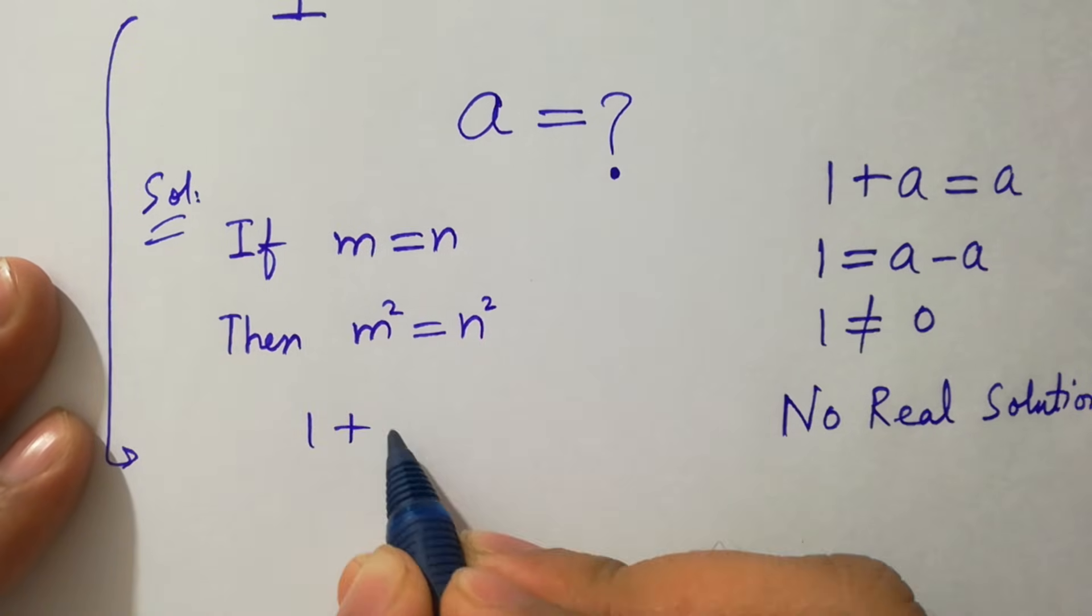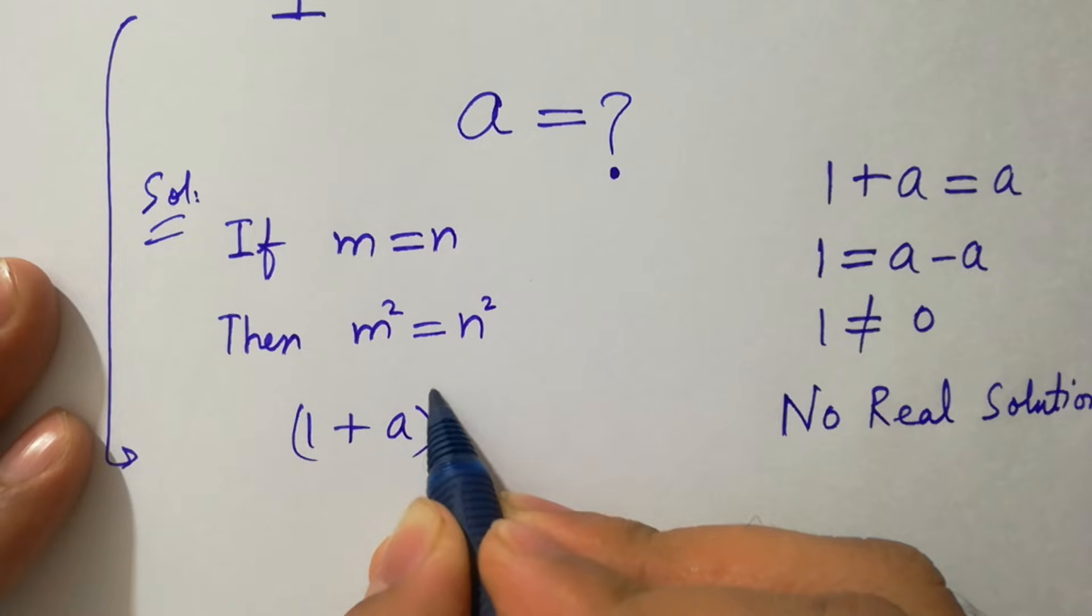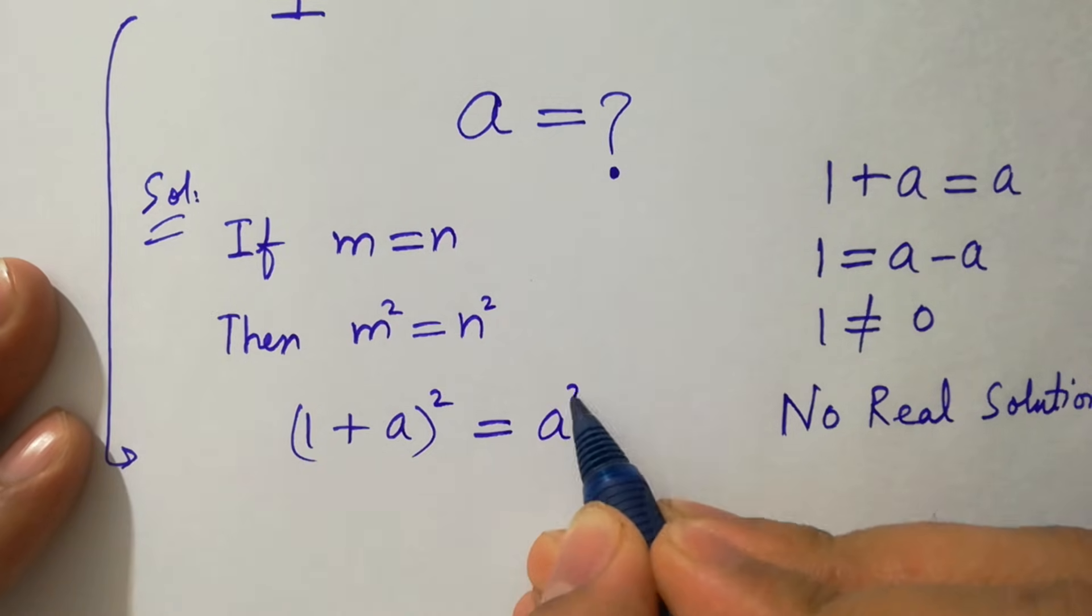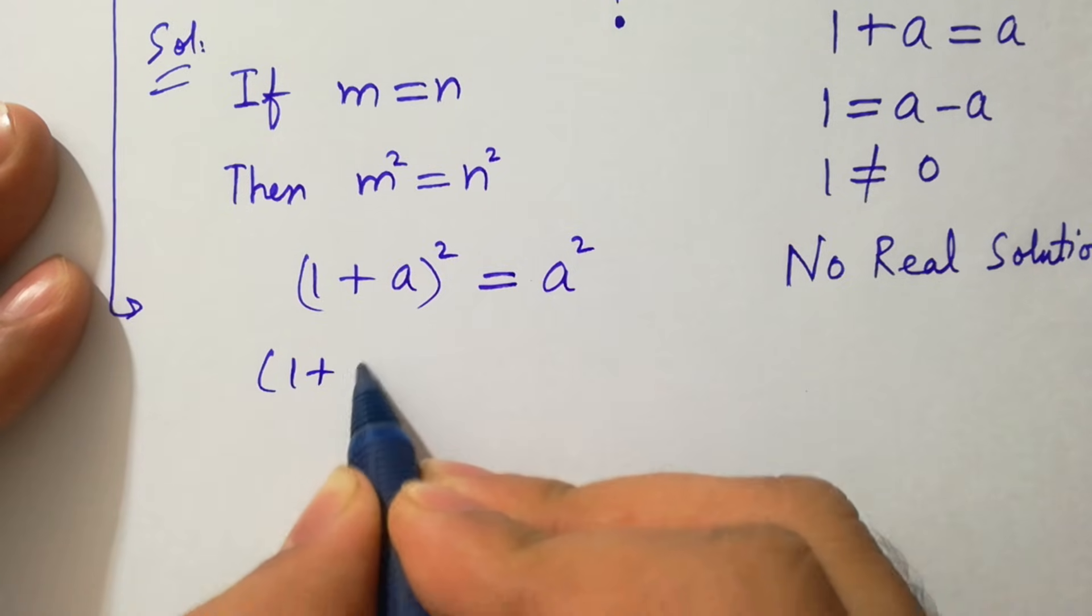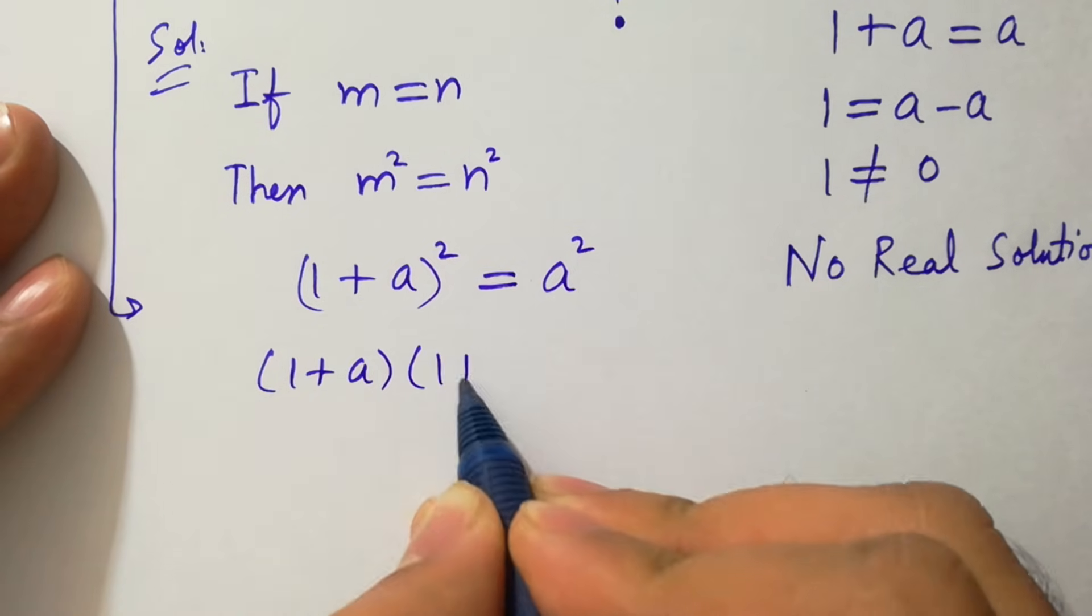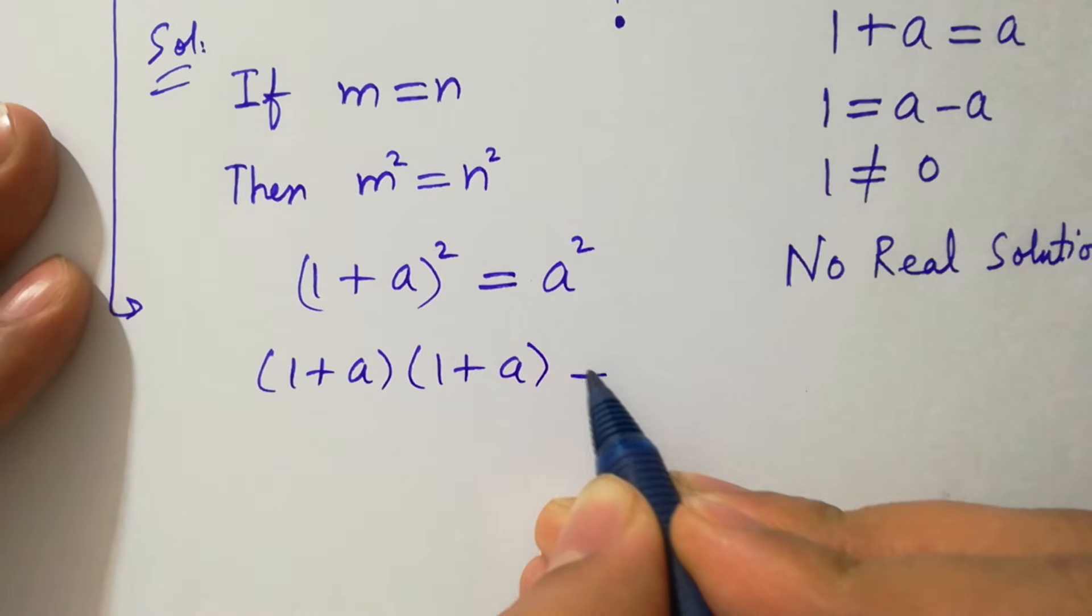(1 + a)² = a², which is the same as (1 + a) times (1 + a) equals a².